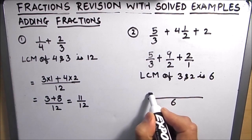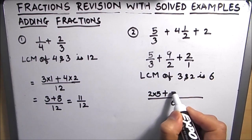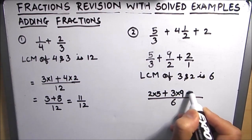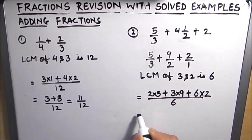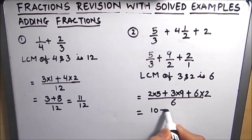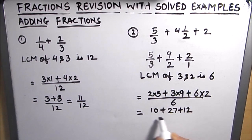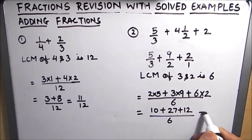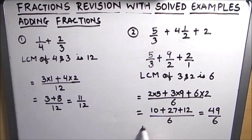With the common denominator of 6, we compute: 3 times 5 gives 10, 2 times 3 gives 27 over 6 contribution from 9, and 6 times 2 gives 12. This becomes 10 plus 27 plus 12 over 6, which equals 49 over 6. So our answer is 49 over 6. This is how we can add fractions.